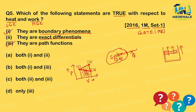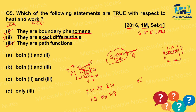Internal energy is denoted with exact differential form because it is a point function. The second statement (exact differential) is wrong. The first and third statements are correct, so option B is the correct answer.